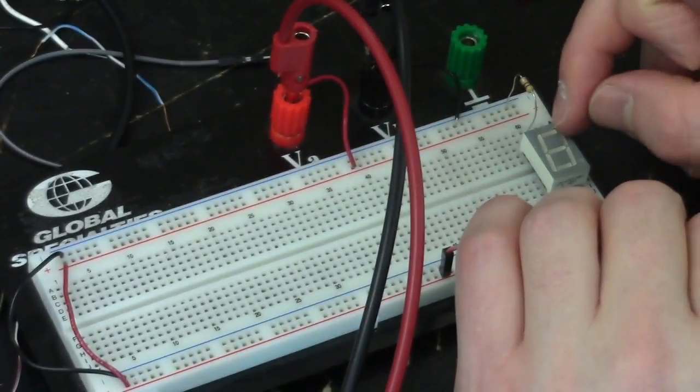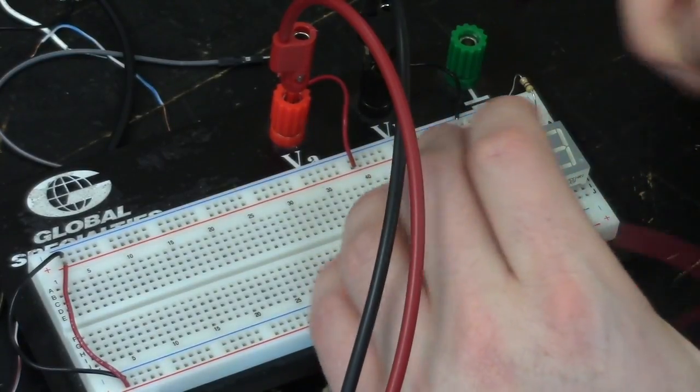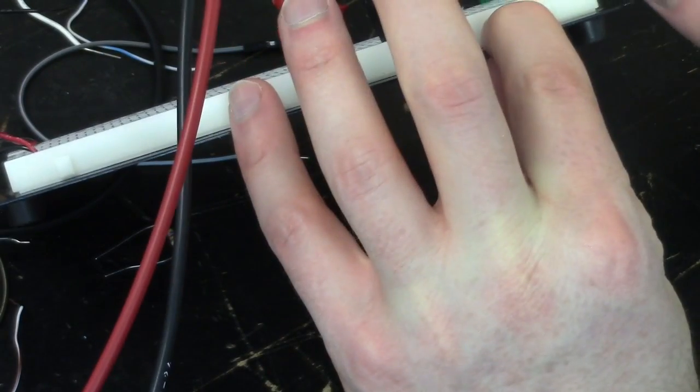Now, there's different kinds. Sometimes the center pin is supposed to be connected to high and the LEDs are facing the other way. But in this particular kind, you can find out what kind it is by Googling the number on the bottom.